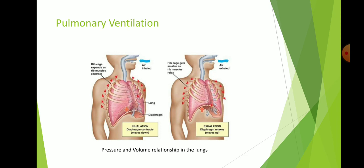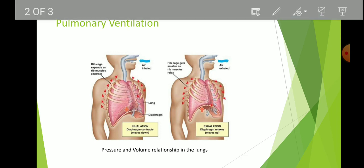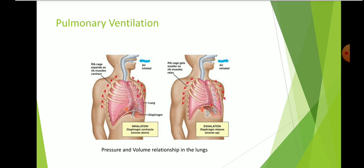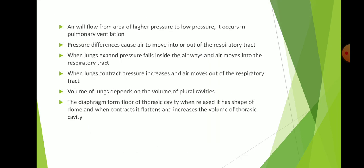Downward movement of the ribcage and upward movement of the diaphragm reverse the process and reduce the size of the lungs. Pressure inside the lungs now exceeds atmospheric pressure and air moves out of the lungs.